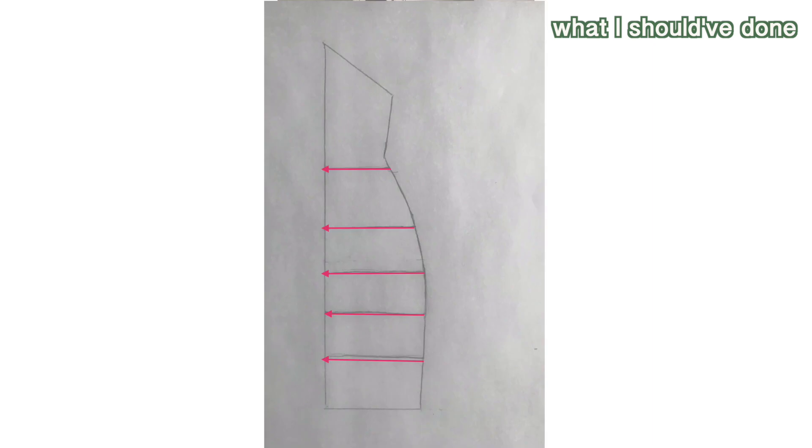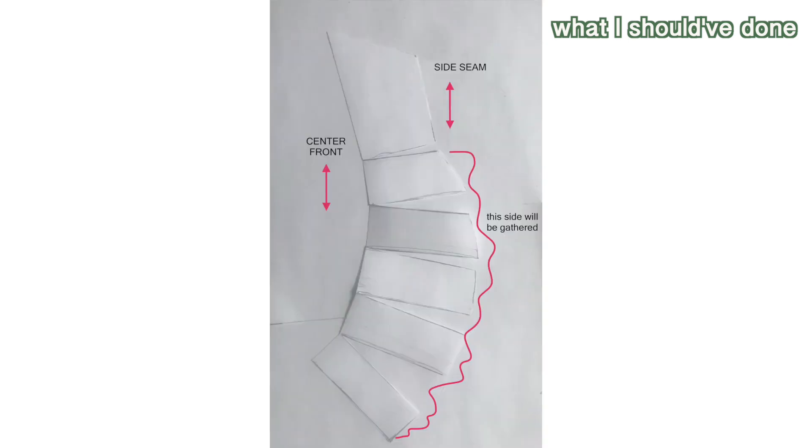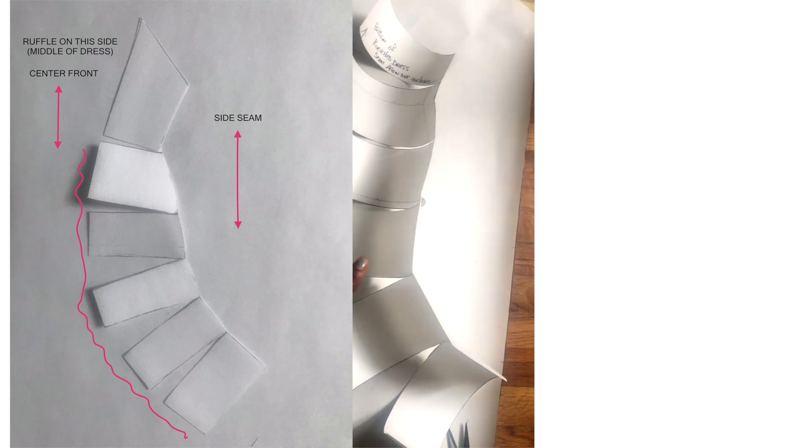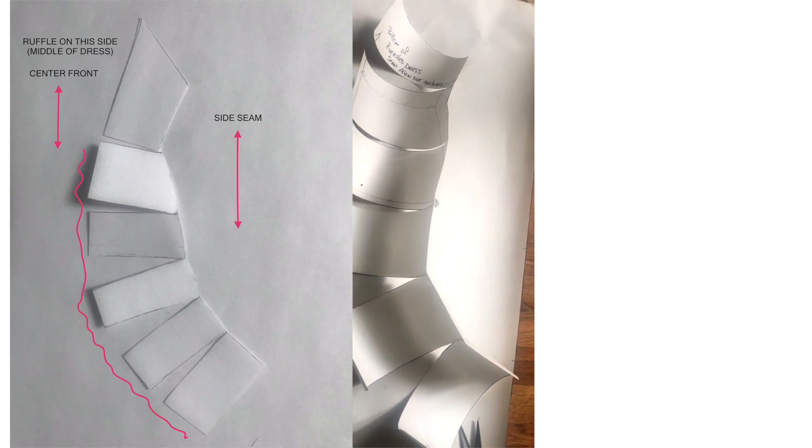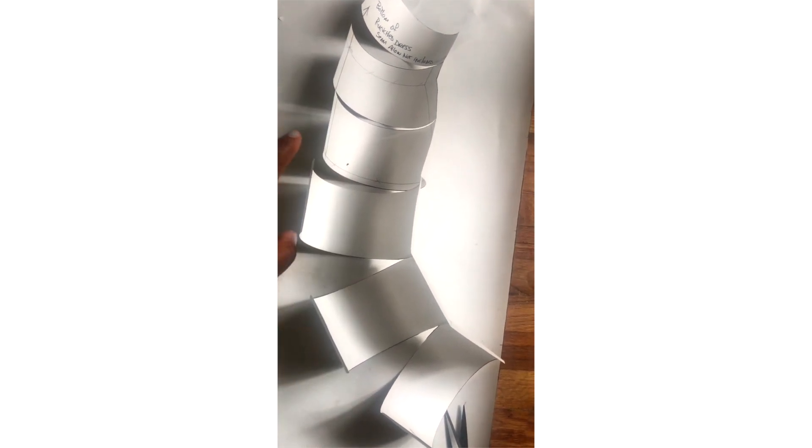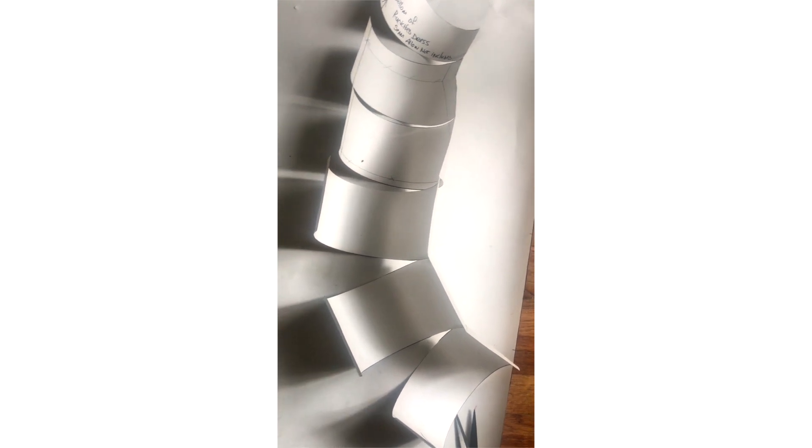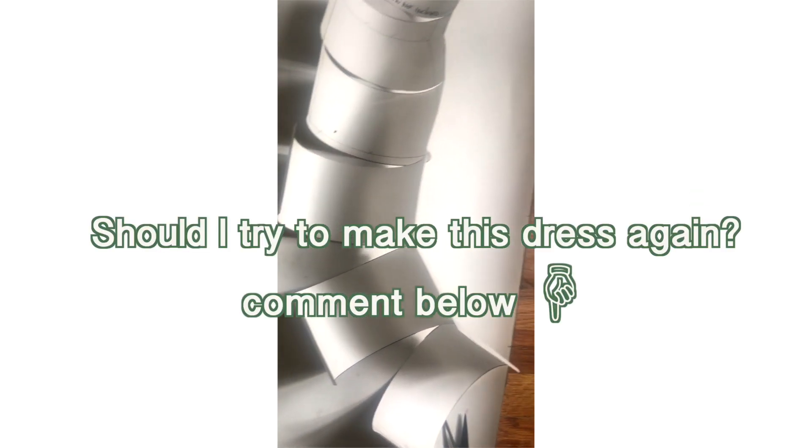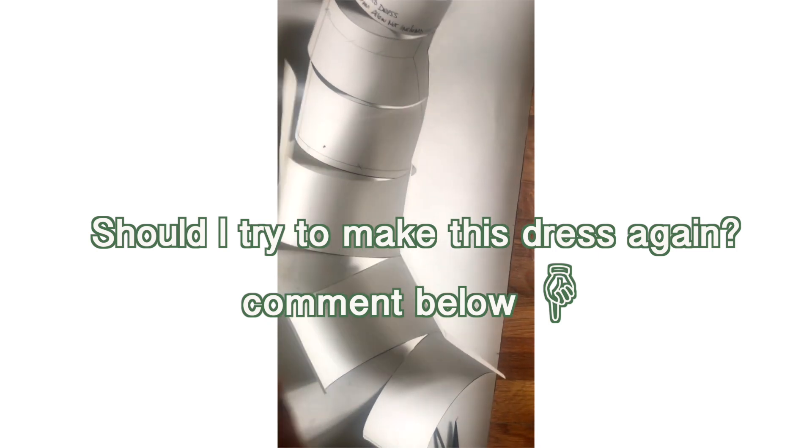So when I open the pattern, the part that gets extended is the center fold area. Instead I needed to do it the other way - I should have been cutting starting from the side seam and ending at the center fold line, so that way the side seam area would be what got extended. Wherever the pattern gets spread out is where the ruched effect will take place. Because the pattern got opened and spread out in the center fold, it meant the dress was ready to be ruched in the middle of the dress rather than at the side.